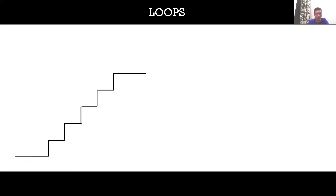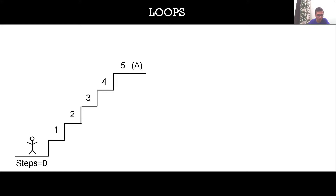Let us first understand what a loop is through this example of a staircase. Let's say we have some staircase and initially I am at the bottom, and I have to walk up the stairs to reach point A. Initially the number of steps I have taken is zero. I'll take my first step, then second, then three more steps to reach my destination A. I'm taking a single step at a time, again and again, till I haven't reached A.